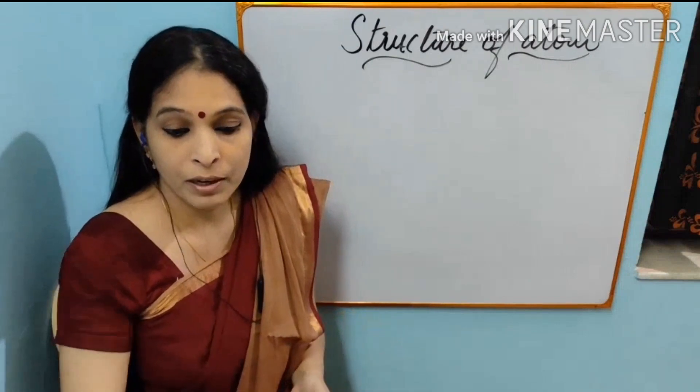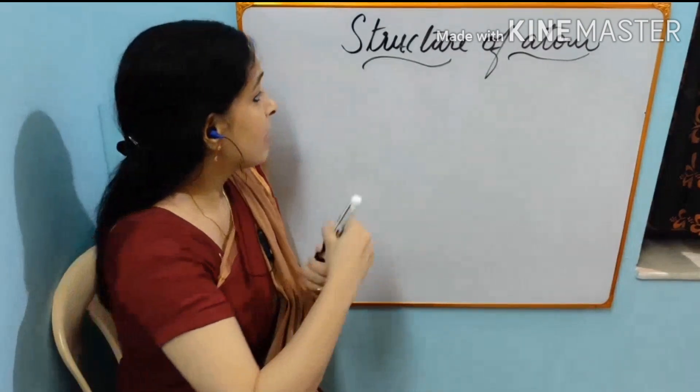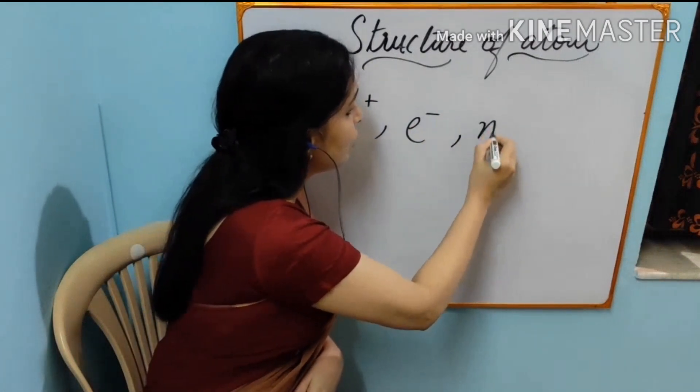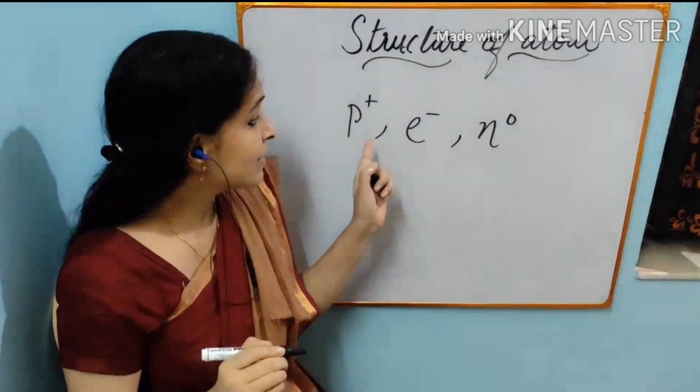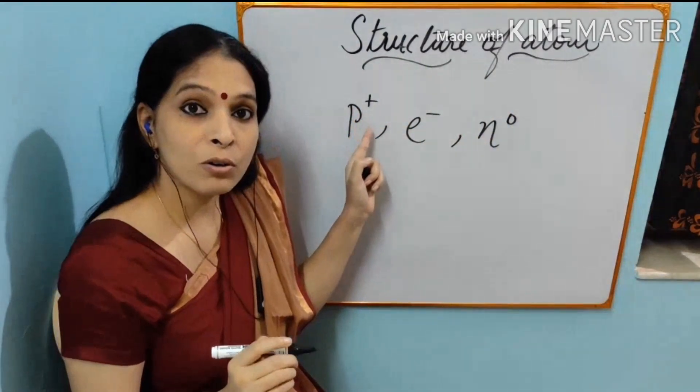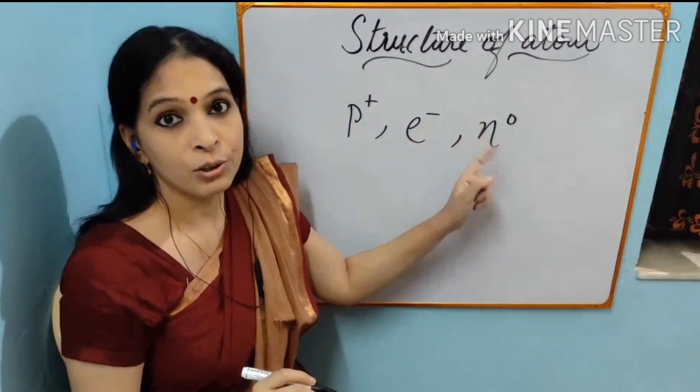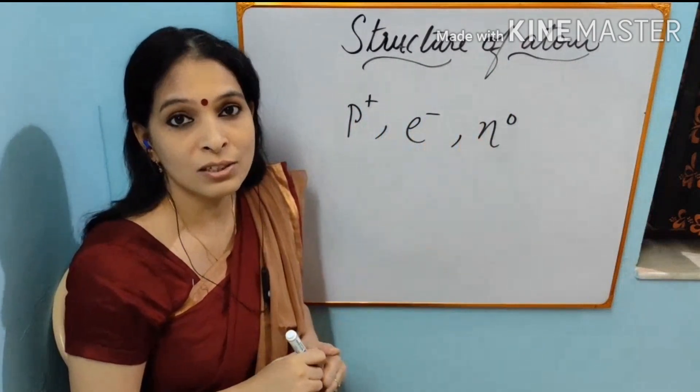What are subatomic particles? Subatomic particles are protons, electrons and neutrons. I have given signs here. That means proton is positive charge, electron is negative charge and neutron is neutral in nature.